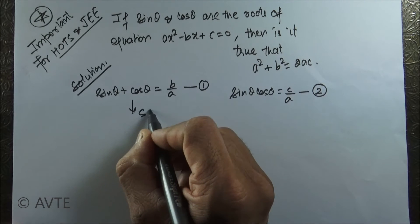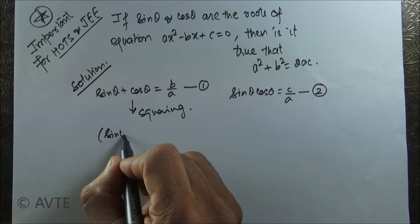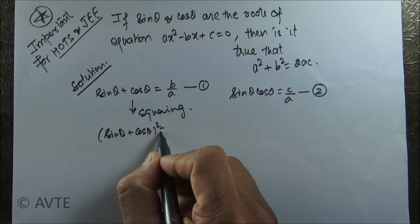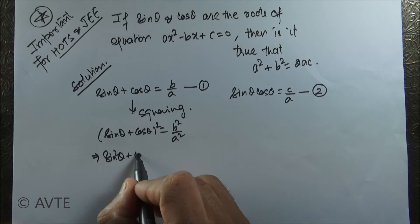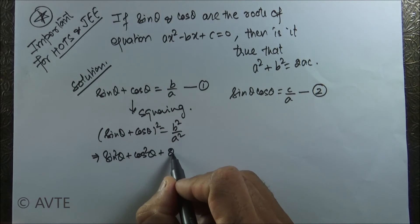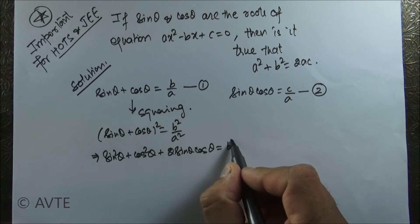Can we just not square the first equation, squaring on both the sides? It is coming as sine squared theta plus cos squared theta plus 2 sine theta cos theta, which is equal to b squared over a squared.